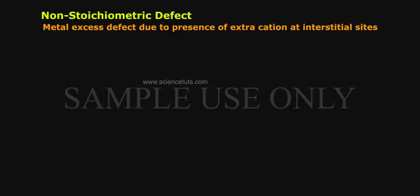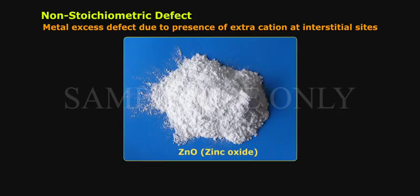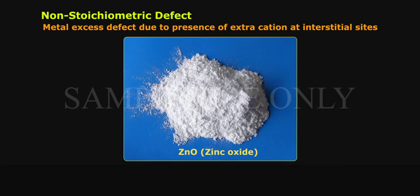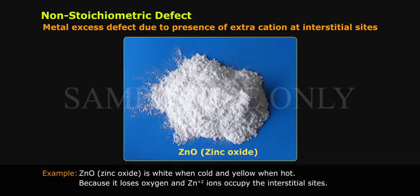Metal excess defect can also occur due to the presence of extra cations at interstitial sites. An example is ZnO (zinc oxide). This is due to the movement of metal ions to interstitial sites and electrons to neighboring interstitial sites. ZnO is white when cold and yellow when hot because it loses oxygen and Zn²⁺ ions occupy the interstitial sites.